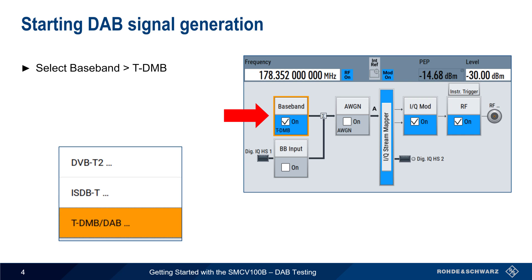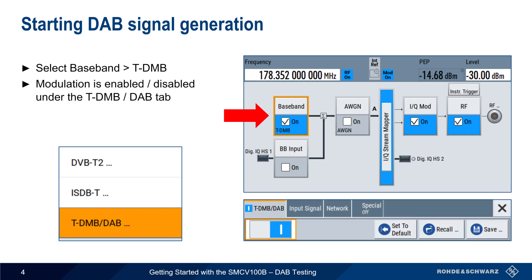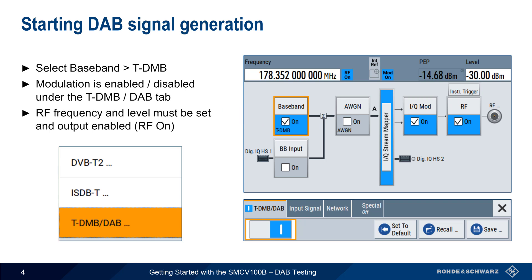Clicking on this block will bring up the TDMB DAB dialog, and a simple toggle switch is used to enable or disable DAB modulation. Note that like all other signal generation tasks on the SMCV, both the RF output frequency and output level must be set, and the RF output block must also be turned on.